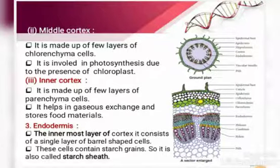After the cortex, you can see the endodermis region. It is made up of a single layer of cells which appear yellow in the diagram. These are called starch sheath.